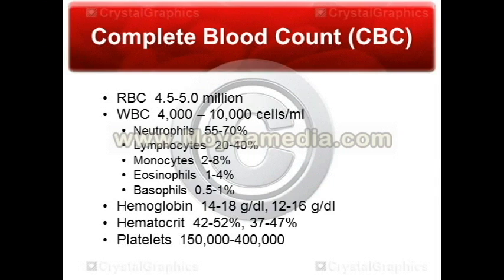Your lymphocyte count will often be elevated due to acute viral infections, such as viral pneumonia, common colds, or a serious virus like bird flu or swine flu. Chronic bacterial infections also often show an increased lymphocyte count, but chronic bacterial infections are not too common — usually bacterial infections are taken care of by the body over time.